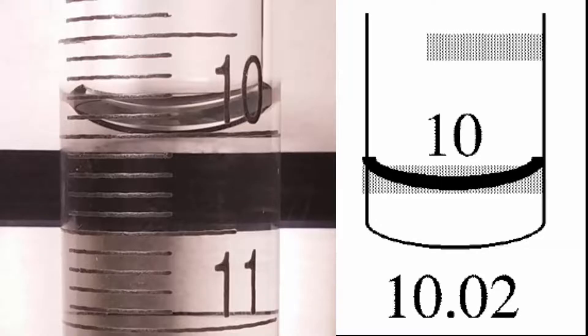Knowing this, we would read this burette at 10.02 because the meniscus is well below the top of the line but still not visible below the line.